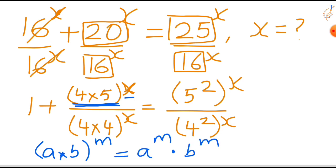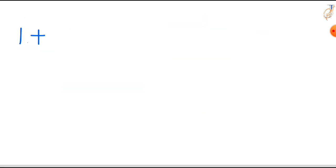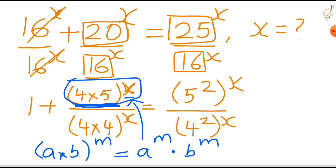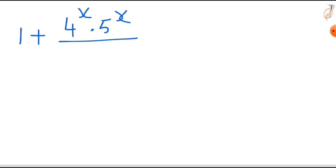Use this rule here. So (4×5)^x we can write as 4^x × 5^x. Similarly, (4×4)^x we can write as 4^x × 4^x.